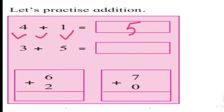Four: one, two, three, four. We add one. Now count the numbers together: one, two, three, four, and five. Four plus one is equal to five.